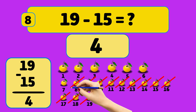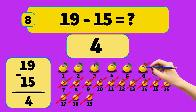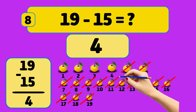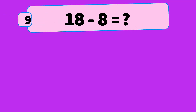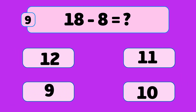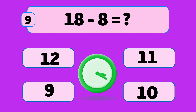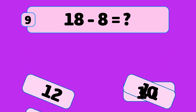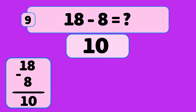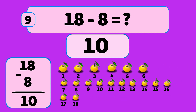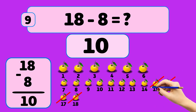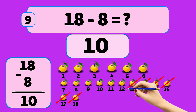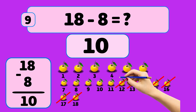Seven, six, five. Now we have four oranges left. What is 18 minus 8? The answer is 10. We start with 18 oranges and remove them one by one: 18, 17, 16, 15, 14, 13, 12, 11.